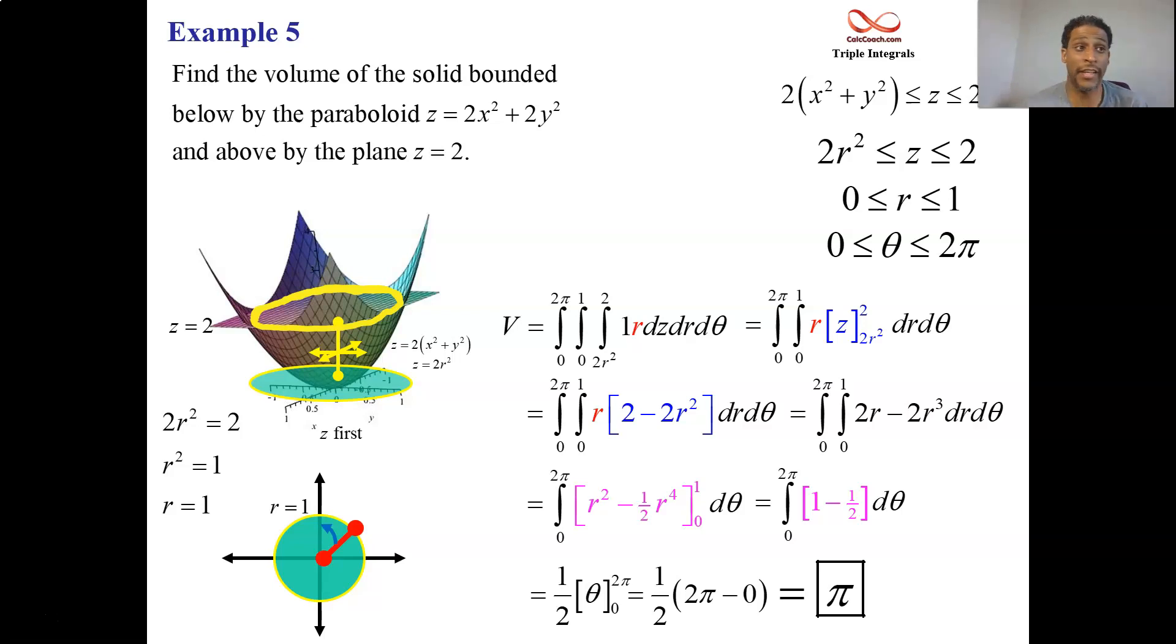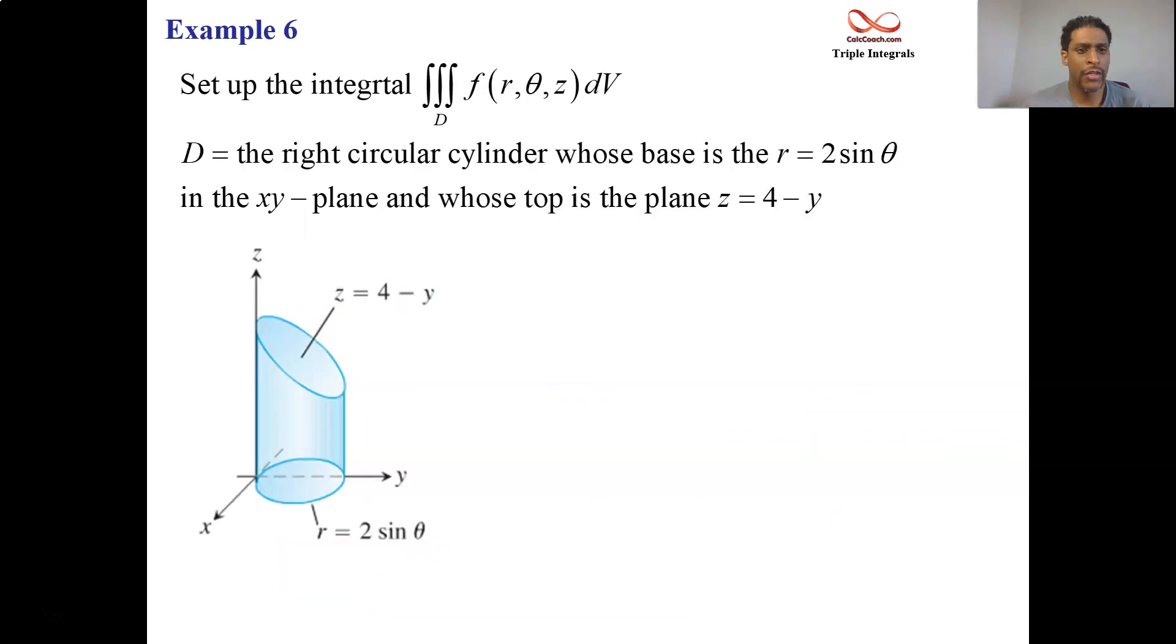Let's look at another example. Example six is us doing just a setup, trying to figure out just the setup for our triple integral. It has some generic function on the inside, and we're going to do this in cylindrical. We have a cylinder. A defined upper and lower z, for sure.